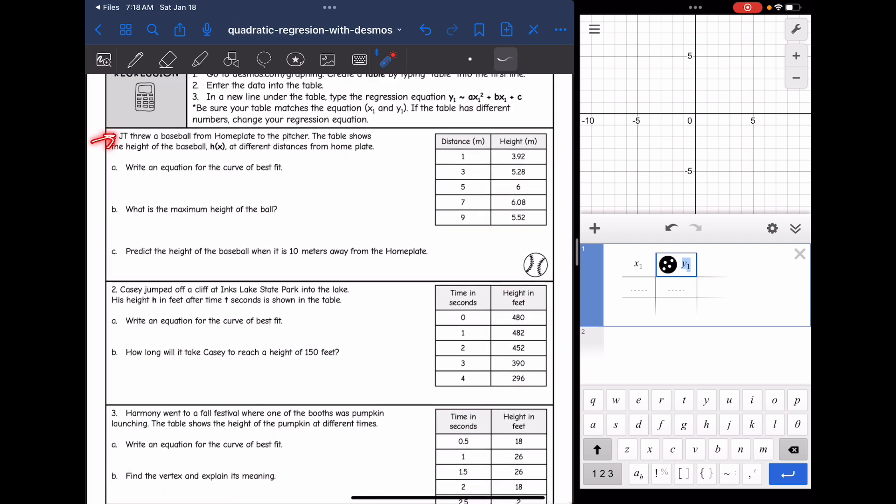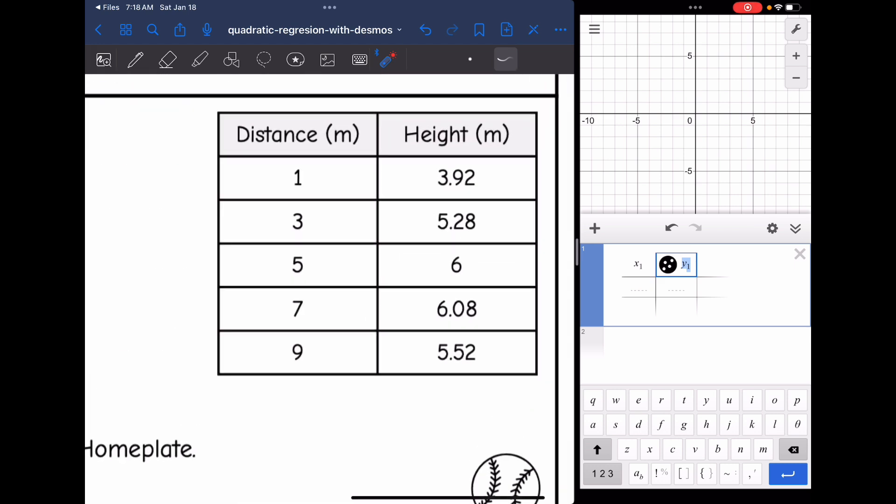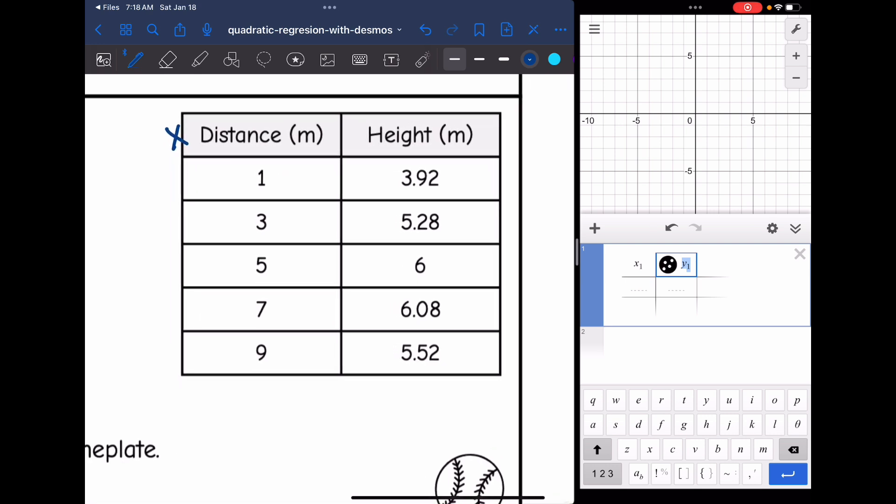It says JT threw a baseball from home plate to the pitcher. The table shows the height of the baseball, h of x, at different distances from the home plate. The first thing it wants us to do is write the equation of best fit. So this distance is going to be my x value, and then it told me the height was h of x or my output or y values. So I already have my table pulled up on Desmos. Now I'm going to enter in that data.